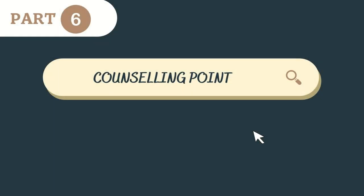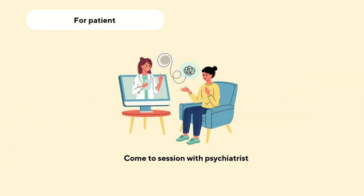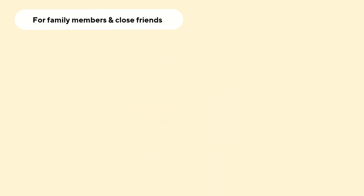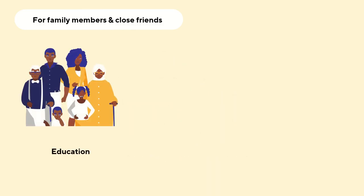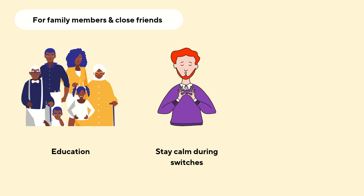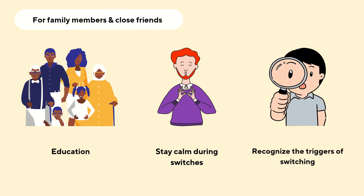In DID, it is important for the patient to attend sessions with the psychiatrist. For family members and close friends of patients with DID, it is important to educate them about DID and its causes, as this helps them understand the changes that can take place as the patient's personality is being reintegrated and helps them recognize symptoms of recurrence. Family members and close friends need to stay calm during switches to avoid unnecessary panic situations. Lastly, it is important for them to learn how to recognize triggers of the switching.